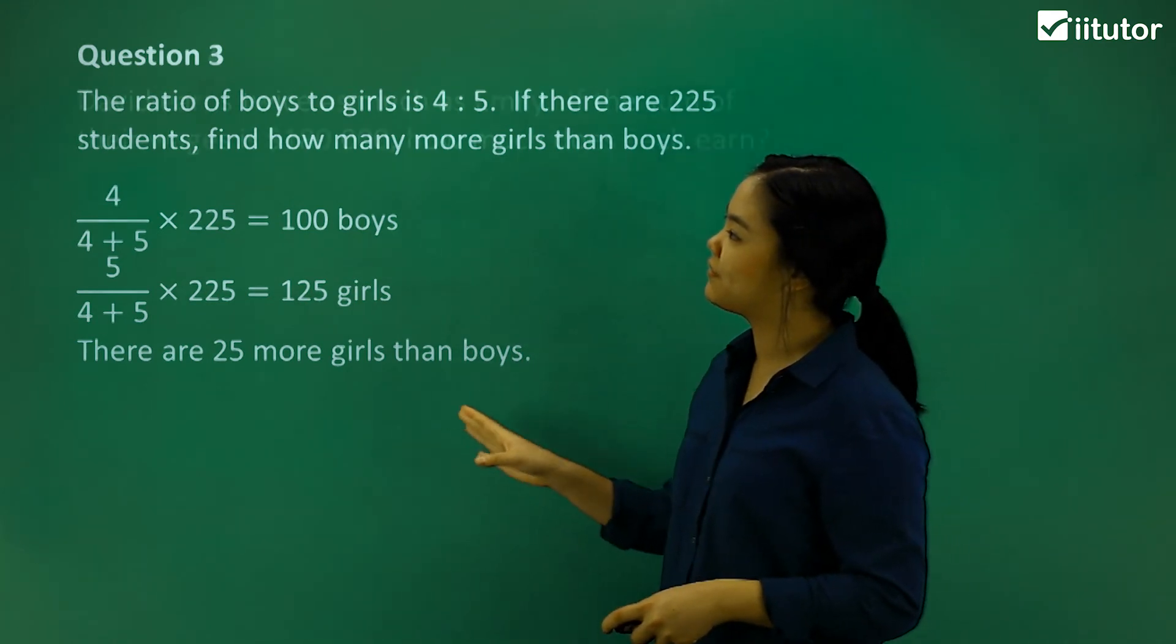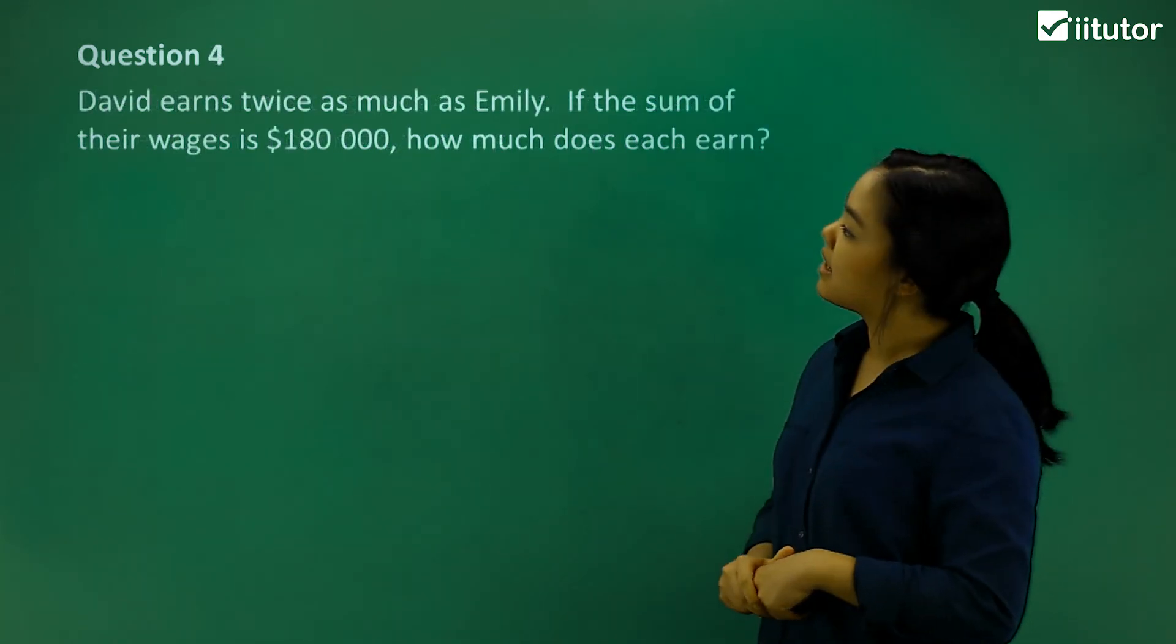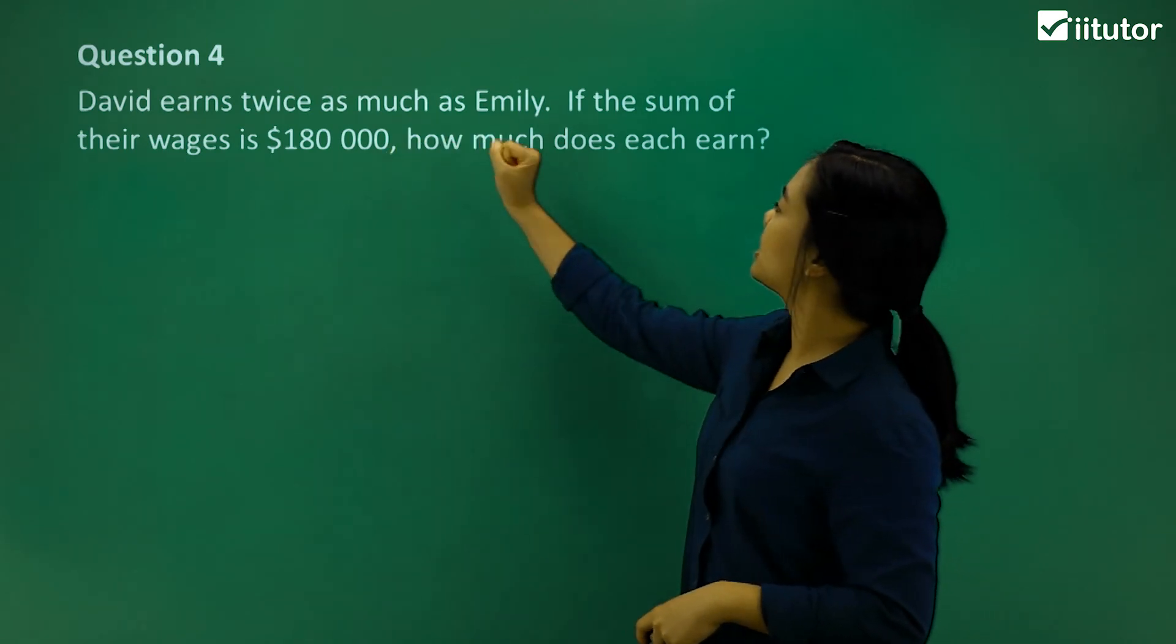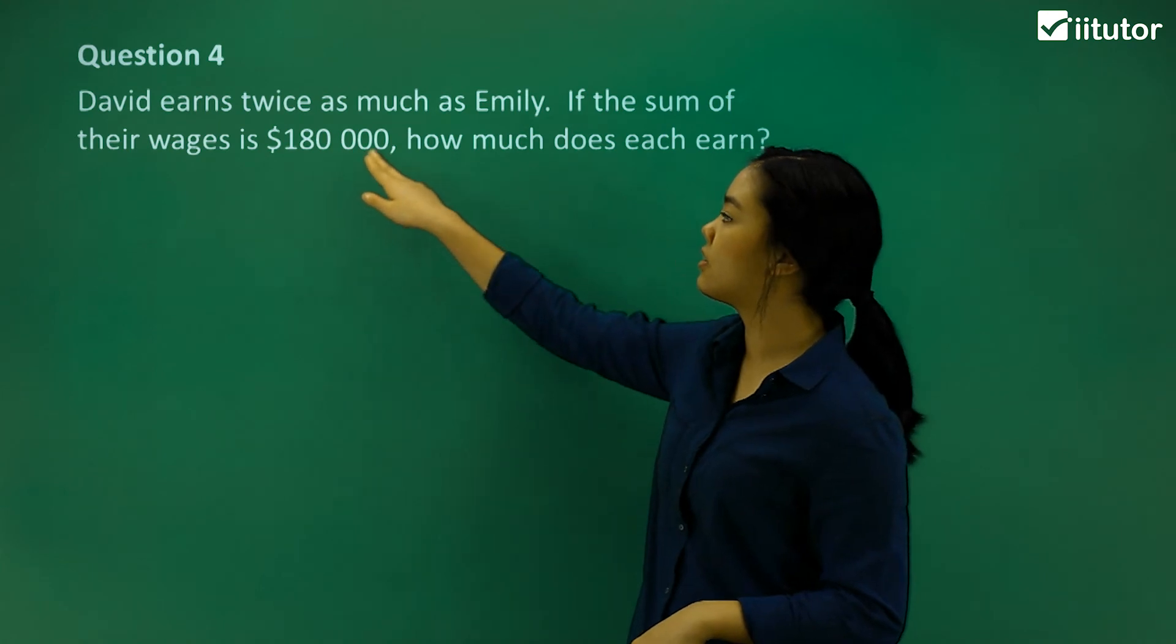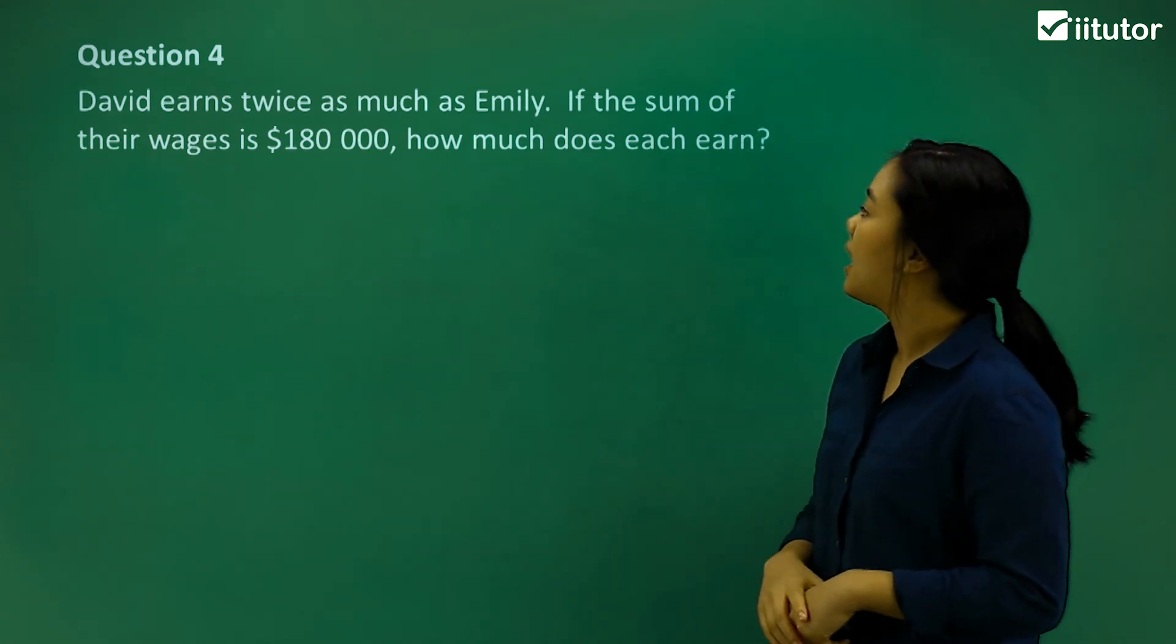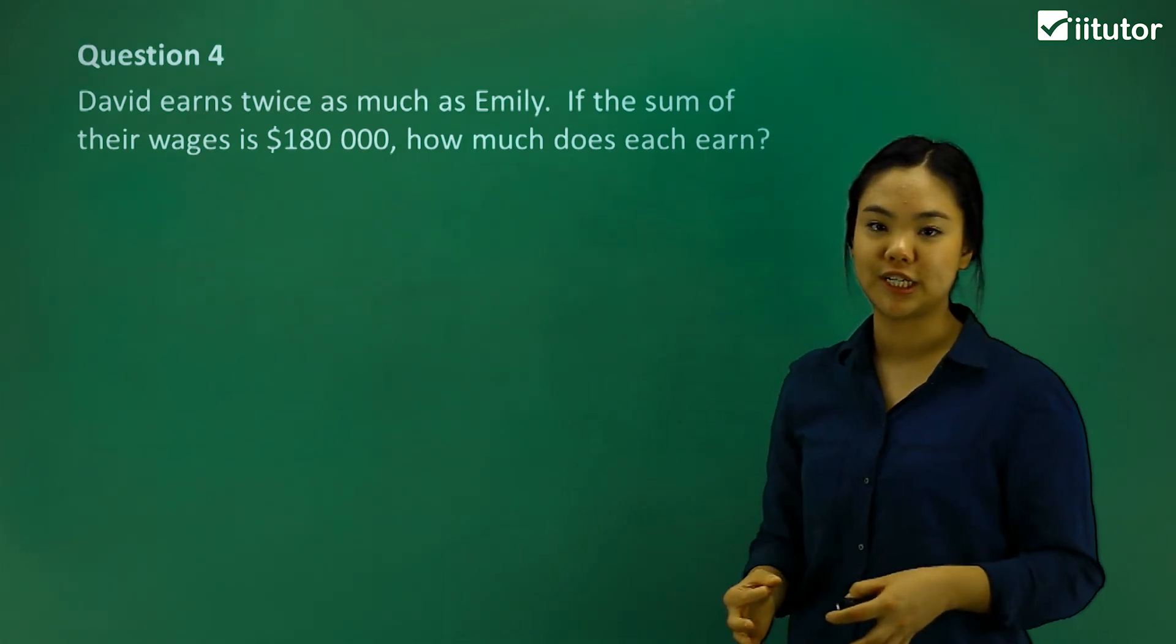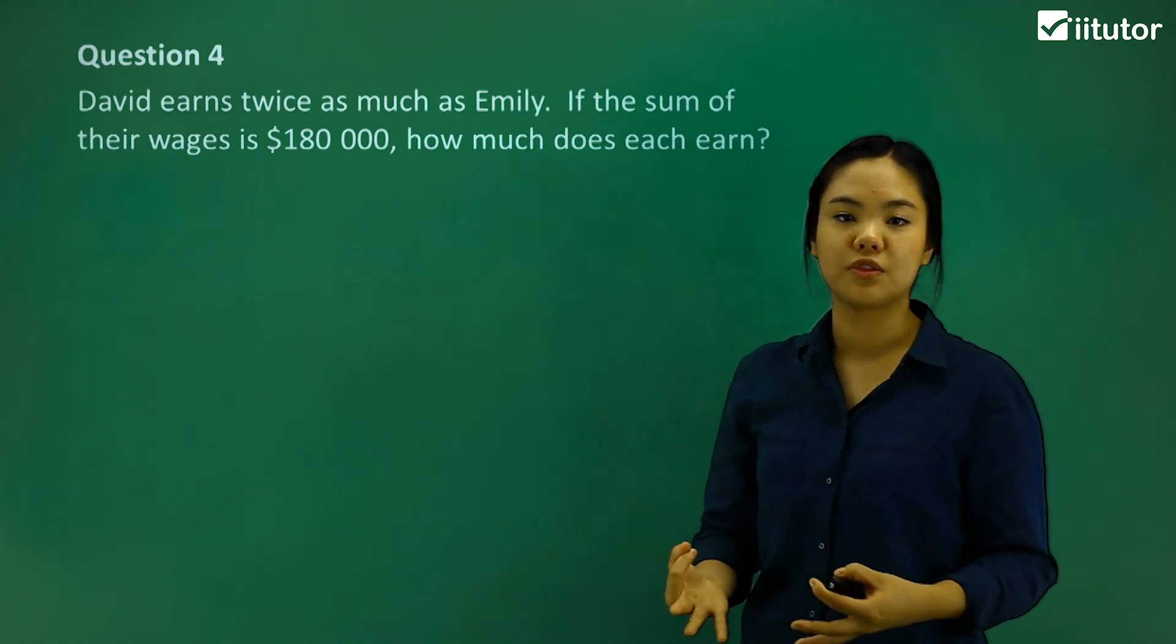Okay, good. So question four, it says, David earns twice as much as Emily. If the sum of their wages is 180,000, how much does each earn?